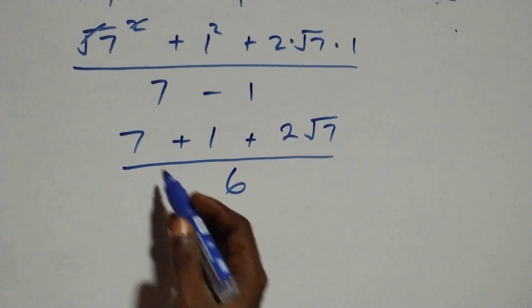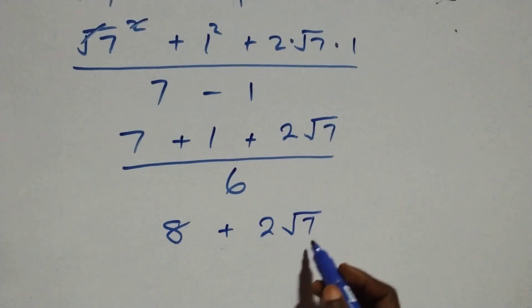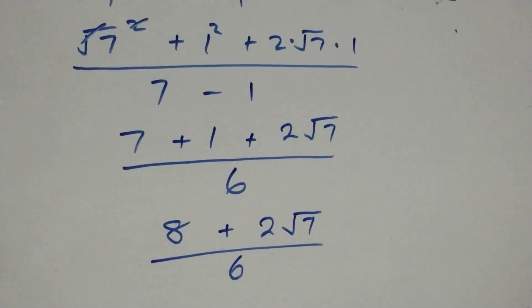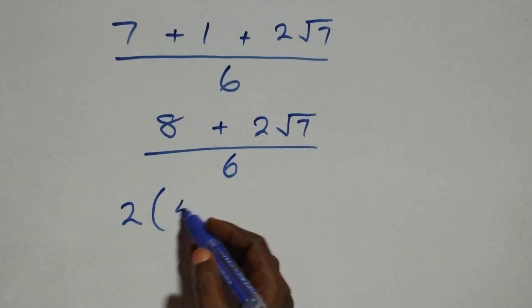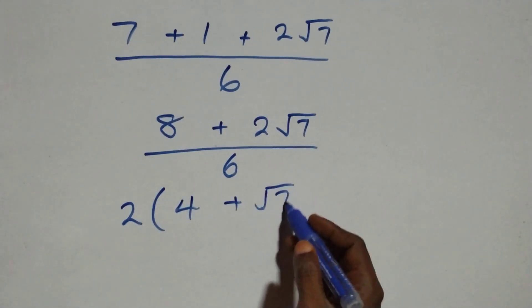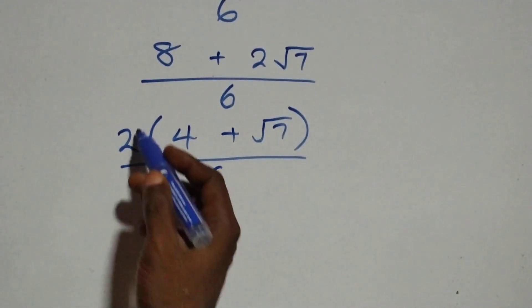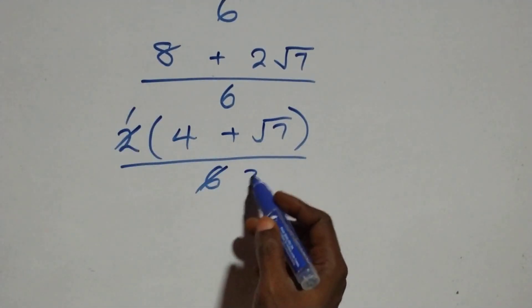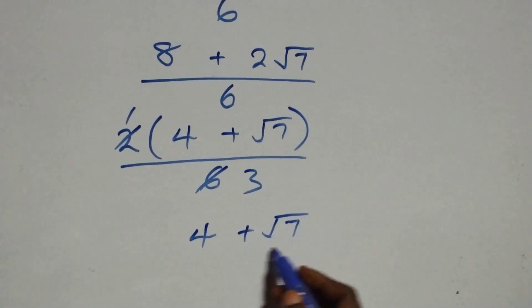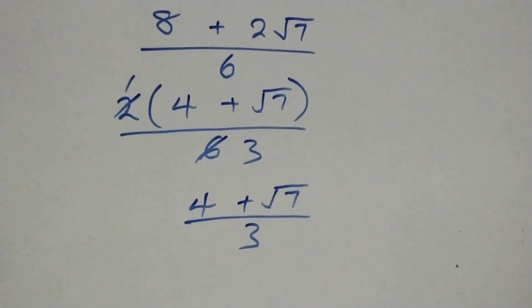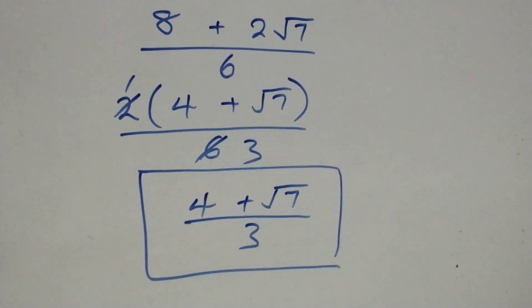Seven plus one gives eight, plus two times root seven gives two root seven, all over six. Factoring out two from the numerator: two into brackets four plus root seven, all over six. Two goes into six three times, so we have four plus root seven all over three.